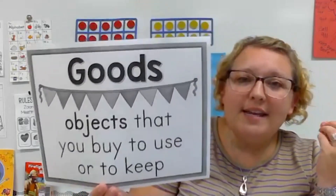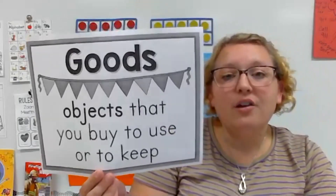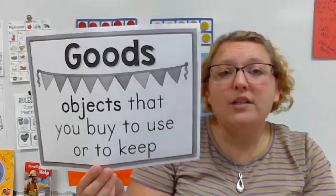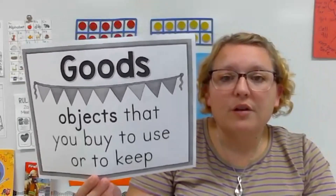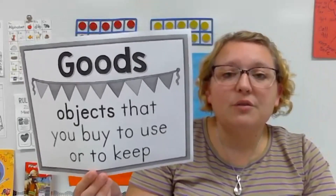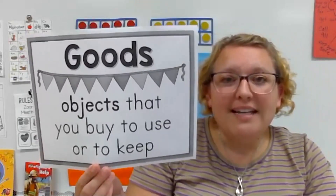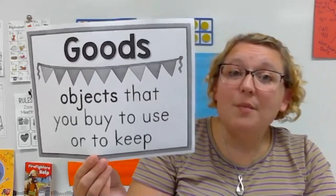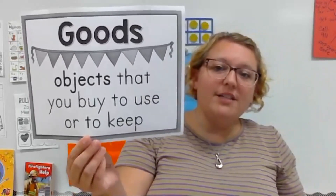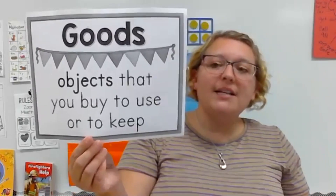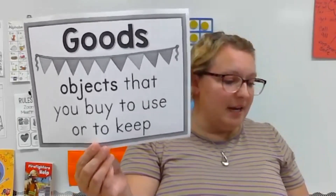A really good example of something that would be a good is if you went to the grocery store and you bought food. You use money to buy food and take it home to use it or keep it in the refrigerator. So goods are objects that you buy to use or to keep.